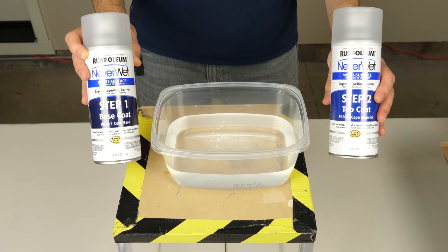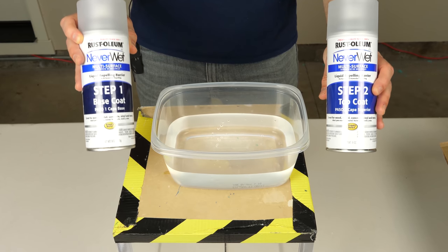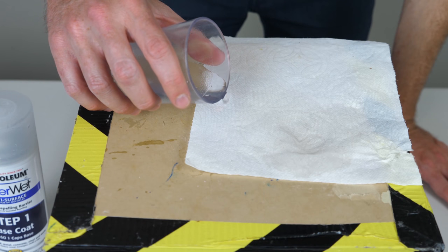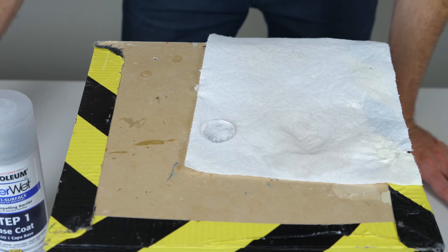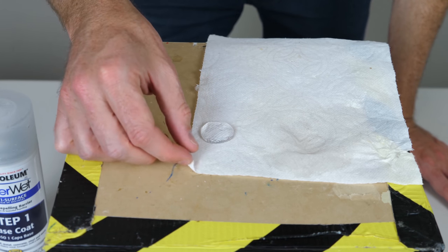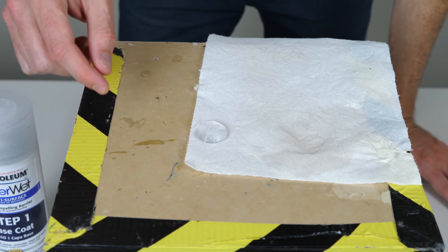This NeverWet is pretty cool stuff. It's called a super hydrophobic coating. So you can see here when I just spray it on a paper towel, how that paper towel now becomes super hydrophobic. So water just beads up on the surface.